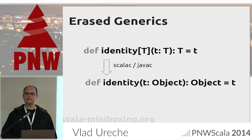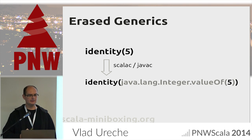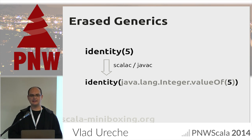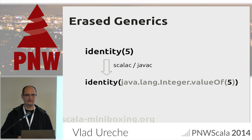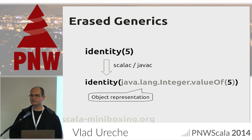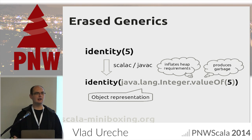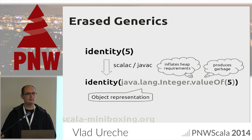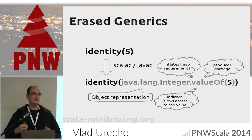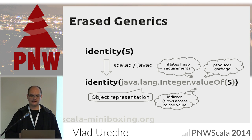Why is this bad? If we try to do identity of 5 in Scala, what actually gets generated is identity of java.lang.Integer.valueOf(5) — the object representation of the integer. This is not good because it allocates an object on the heap, inflating heap requirements and producing garbage. It also doesn't provide direct access to the value but needs to go through an accessor.